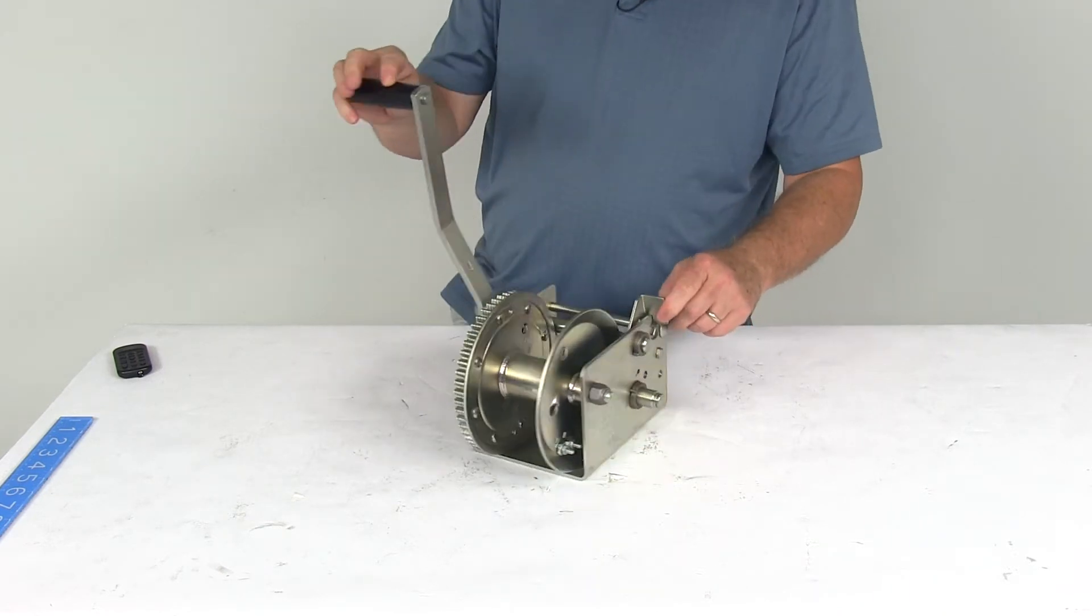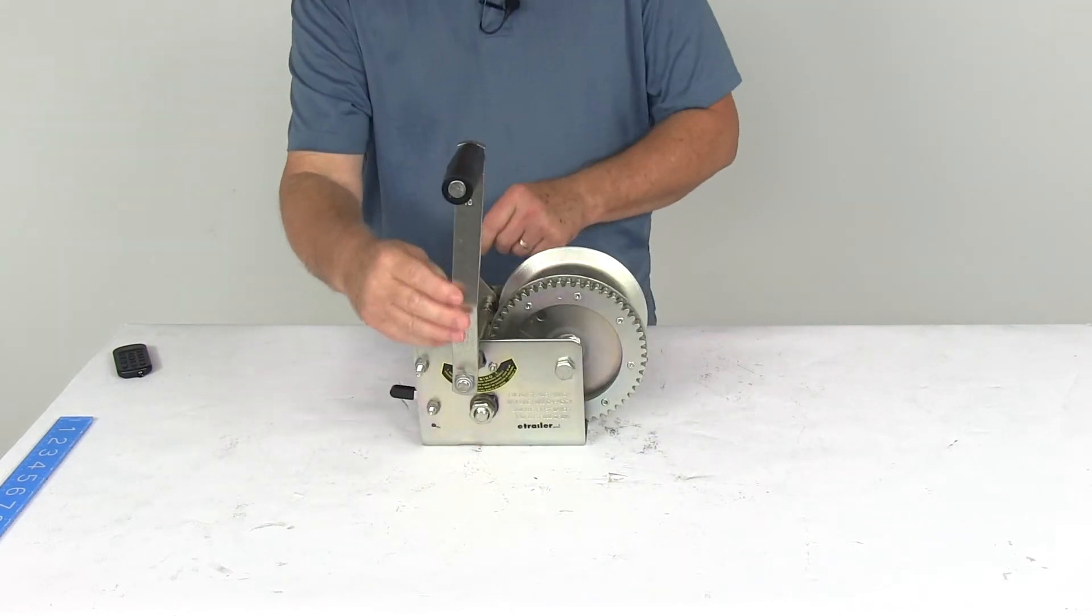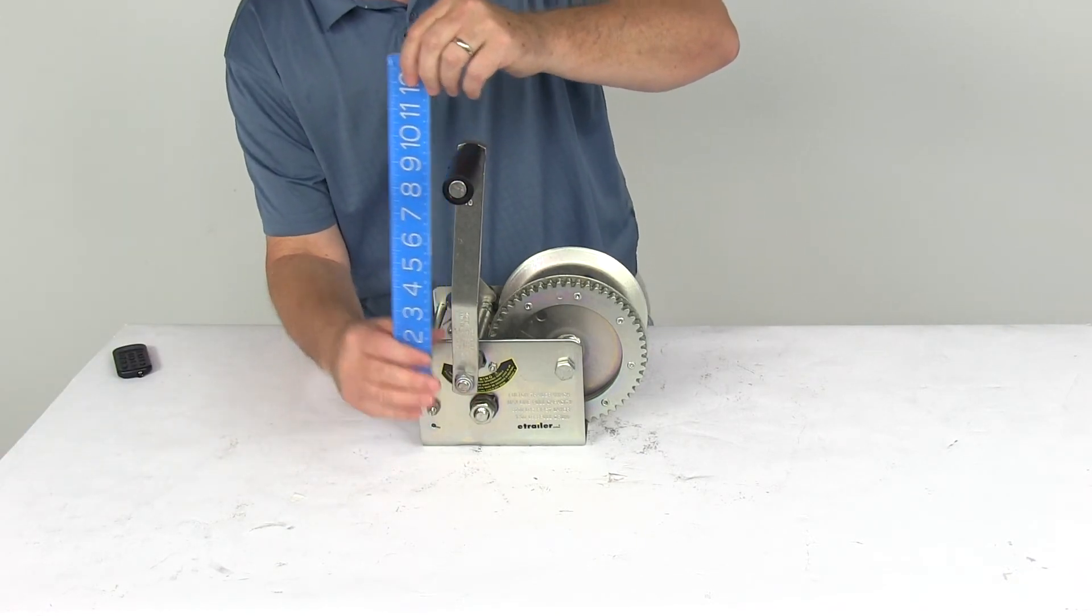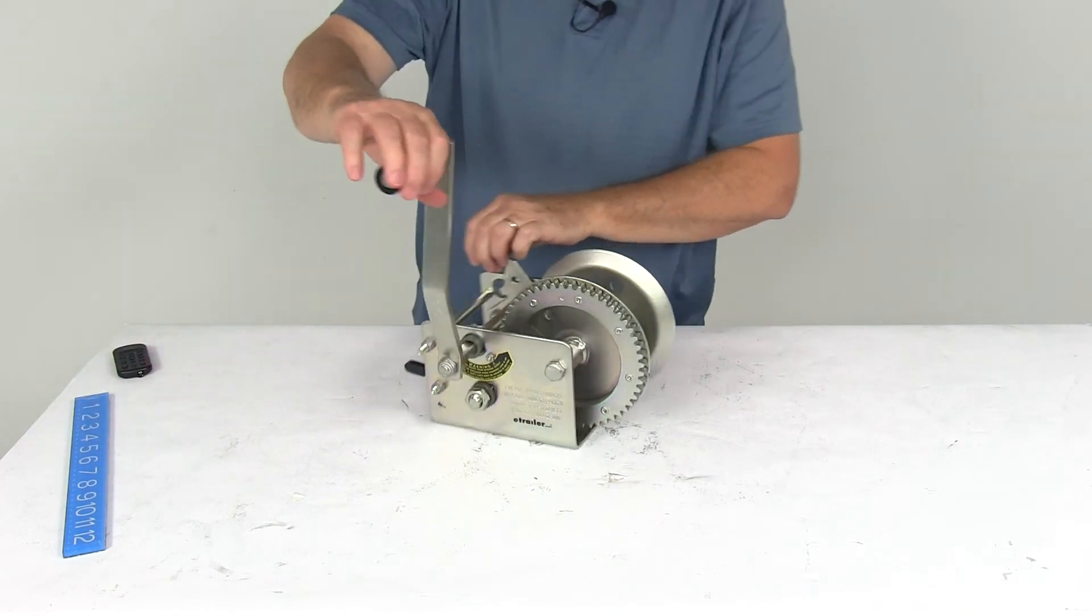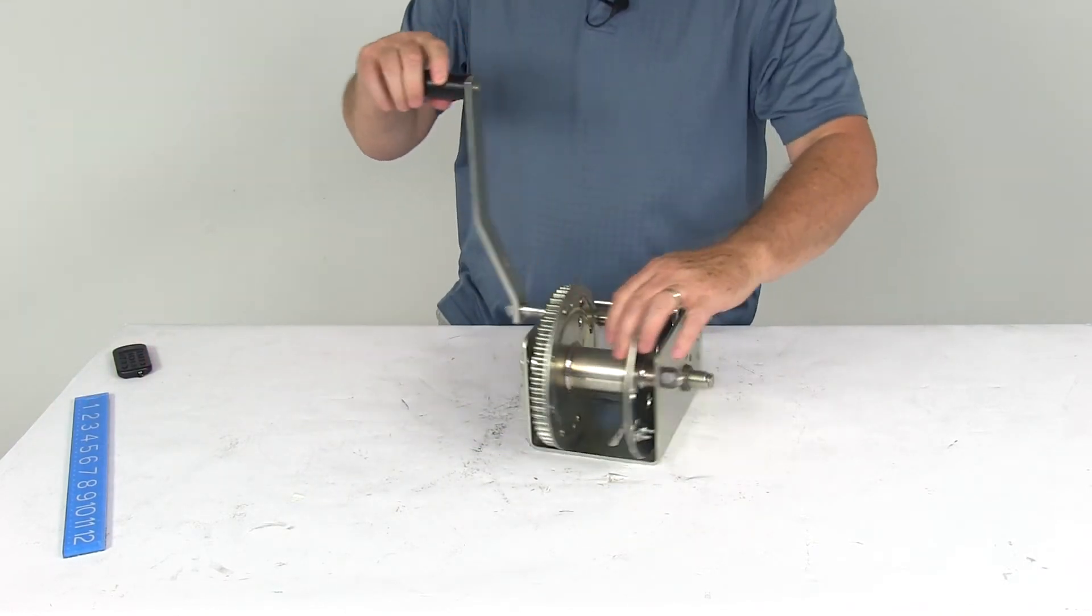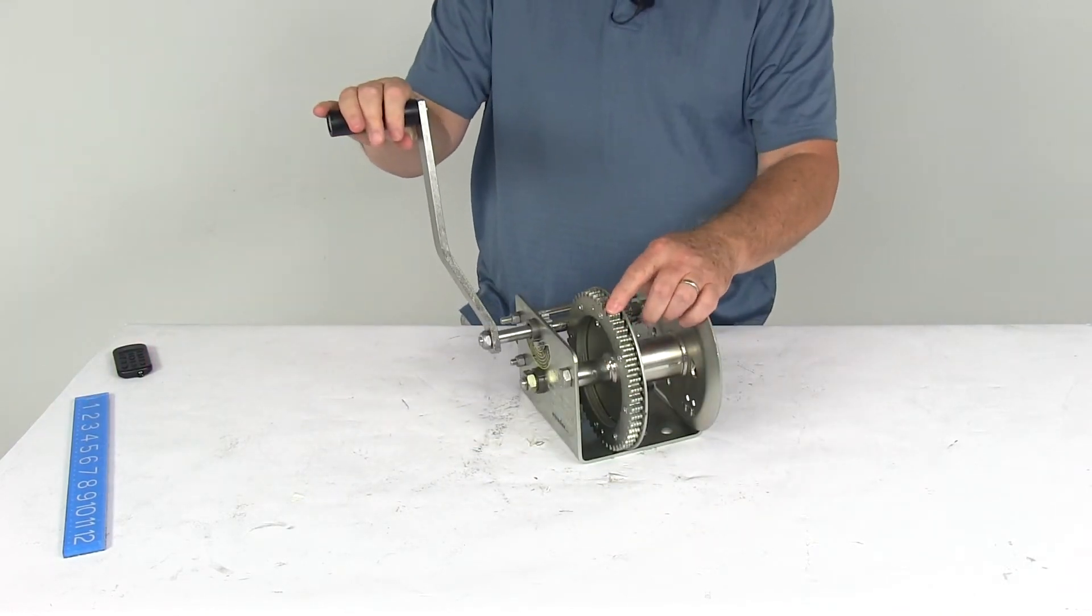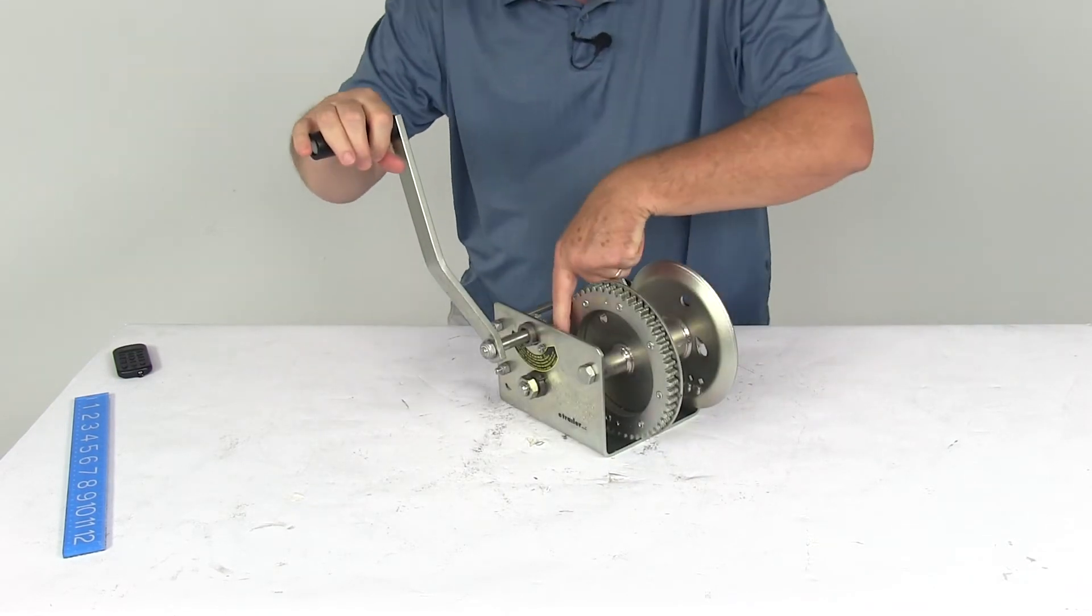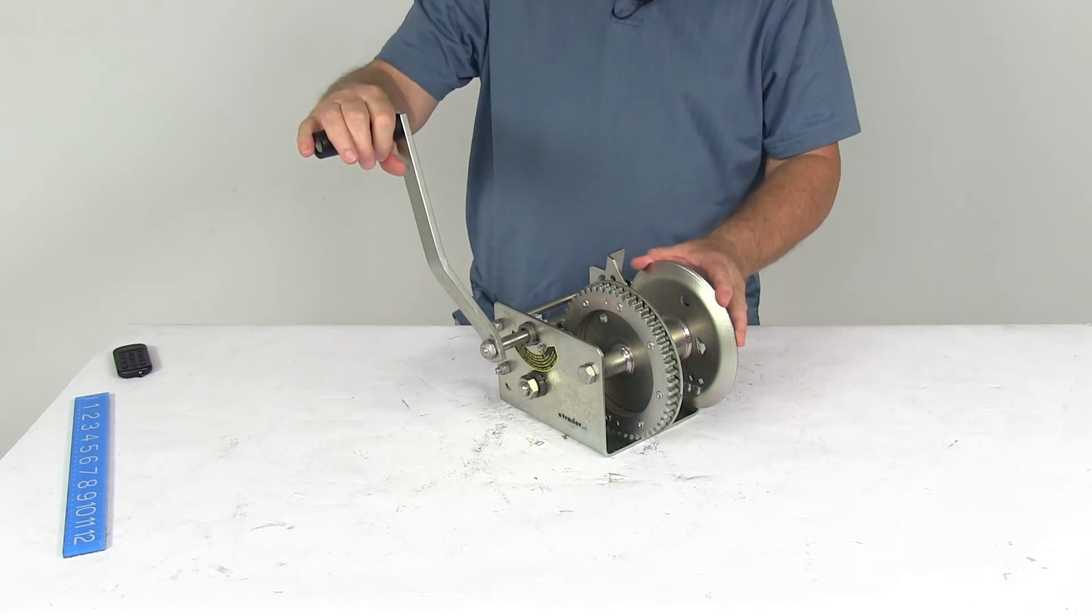A few specs on this. The handle length, which is from this center to this center, is going to be right at 10 inches. The gear ratios we had mentioned, the high speed, which is this larger gear here, it's 5.1 to 1. The lower gear or the lower speed, which is the smaller one in there, that's 16.2 to 1.